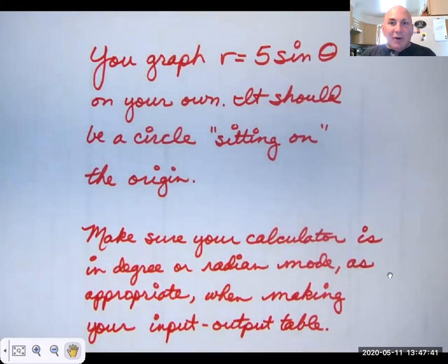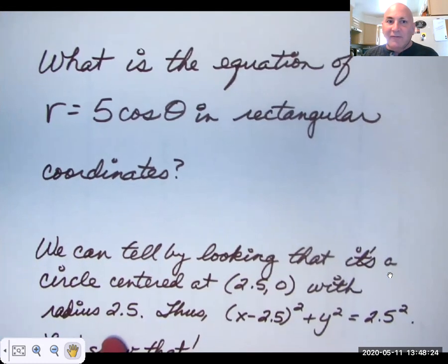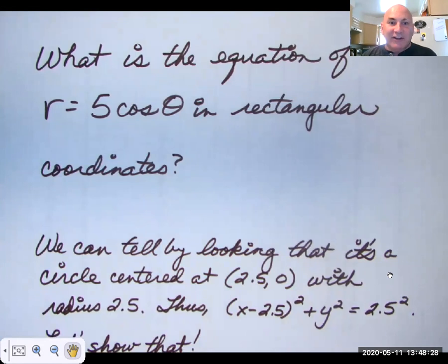So you should graph R equals five sine theta on your own. And you'll find that it's a circle sitting on top of the origin or on top of the pole. You'll notice that five cosine theta, cosine, we always think of it as an x-term, so that goes along the x-axis. And sine is a y-term. That's going to be straddling the y-axis. Graph it and see. Of course, make sure that when you make your input-output table, if you do it that way rather than desmos, make sure you're in the correct mode for whatever angle measure you're using.